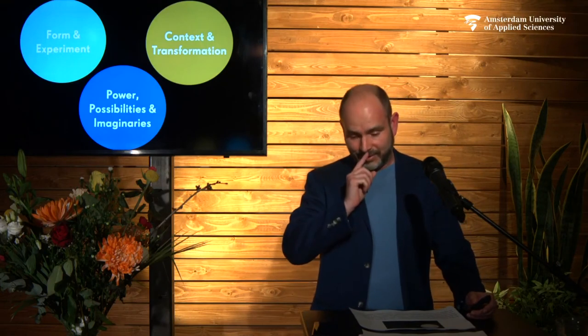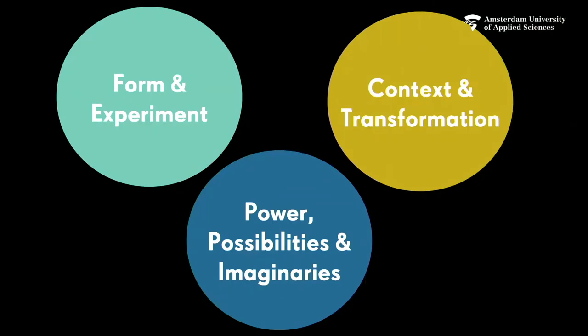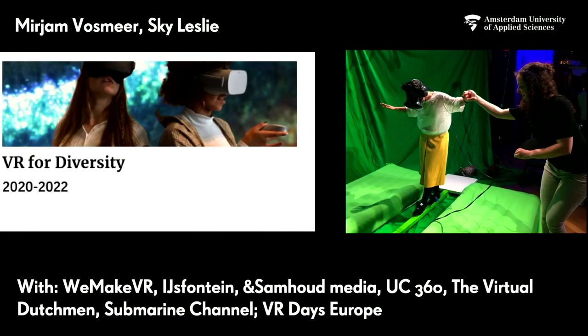Together we do that in three types of research. The first is form and experiment. The second is context and transformation. The third we've called power, possibilities and imaginaries. Form and experiment is the research approach in which we look at new technologies as they unfold, try to understand what these new technologies are, and how we can use them in the context of civics. For instance, Miriam Vossmeer is working in various projects on virtual reality — trying to understand how that medium works, how we can tell a story in it, how people experience it. Once we understand that, we can apply it in the context of civics — for instance, in the context of a museum or festival that invites people to reflect on the theme of diversity.